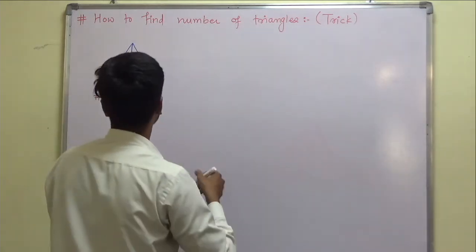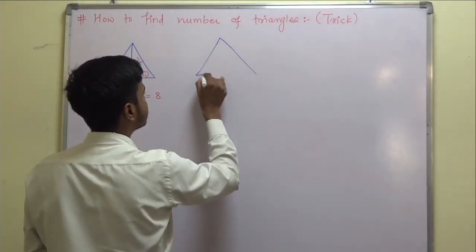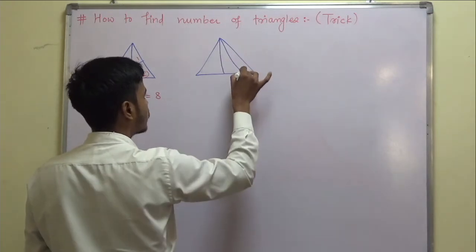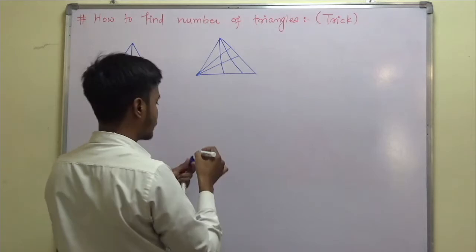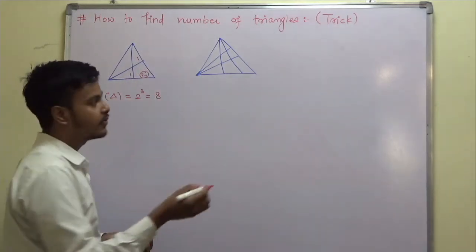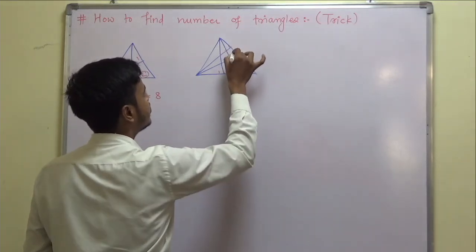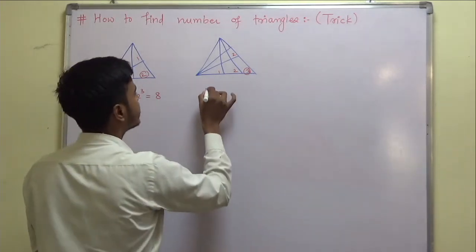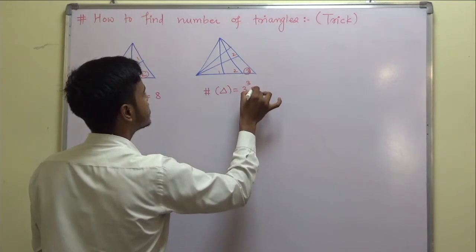Now let us make it more interesting. Suppose you have a triangle with 3 divisions on each side. Going with the same thing, counting 1, 2, 3 and 1, 2, 3. The number of triangles is equal to 3 cubed, which is 27.